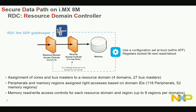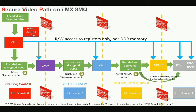Typically, we configure the CPU to not have access to the secure buffer, and the same applies to SDMA, USB, and all other bus masters. We allow only the hardware components involved in the secure video pass to access secure memory: the CAAM (hardware crypto acceleration module), the VPU, the DCSS — and now we are adding the HDCP controller.